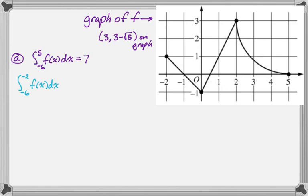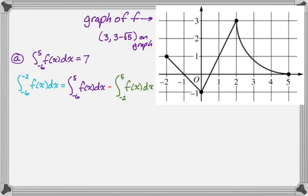The first thing I'm going to do is break down that integral into the sum — or actually a difference — of two integrals. To get just from negative six to negative two, I go from negative six to five and then subtract off the integral from negative two to five. That'll leave me with just the integral from negative six to negative two.